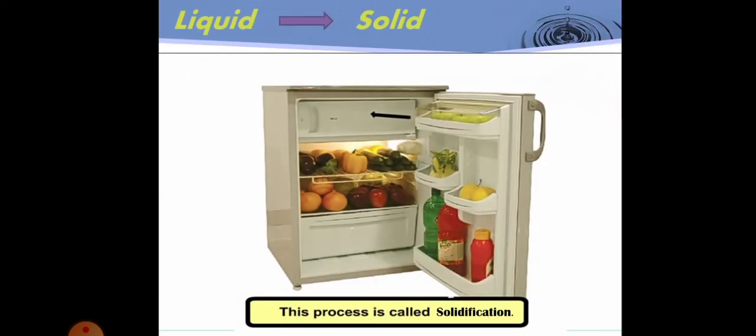Next is liquid changes into solid. Freezing of water into ice is a form of solidification. If you fill water in an ice tray and keep it in the freezer, you will see that after some time the water turns into ice. The process by which a liquid changes into a solid on cooling is called solidification.